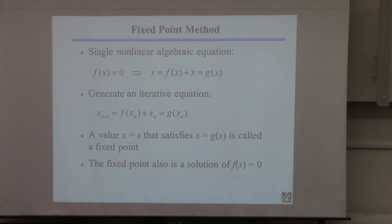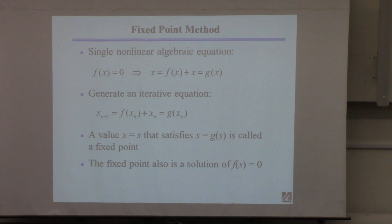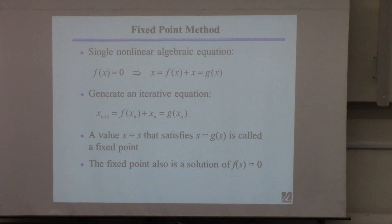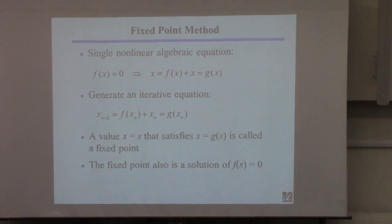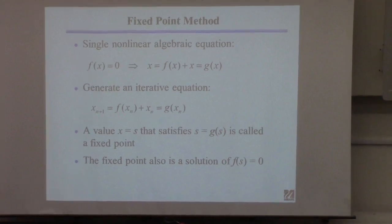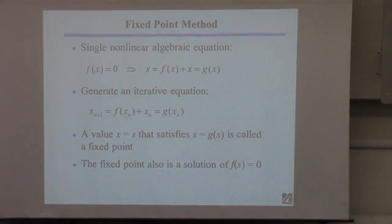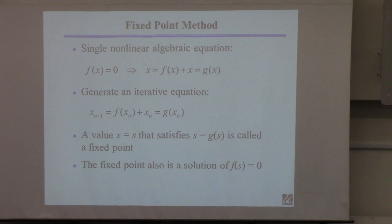We start with a value x₀ — a guess of the solution — plug it in to generate x₁, then plug x₁ back in to get x₂, and so on. There are many different ways to form the function g(x). A point that satisfies x = g(x) is called a fixed point, which is why this is called the fixed point method. By definition, if you plug the solution s into g, you get s back.